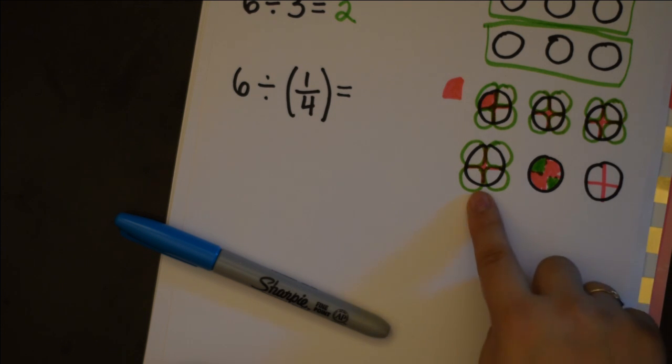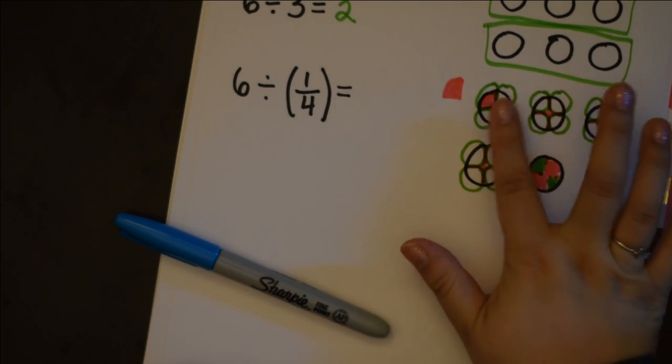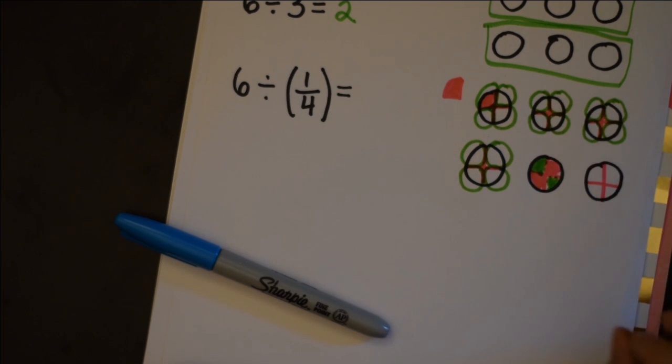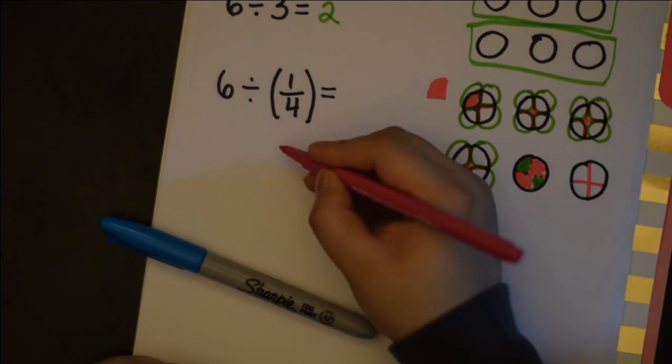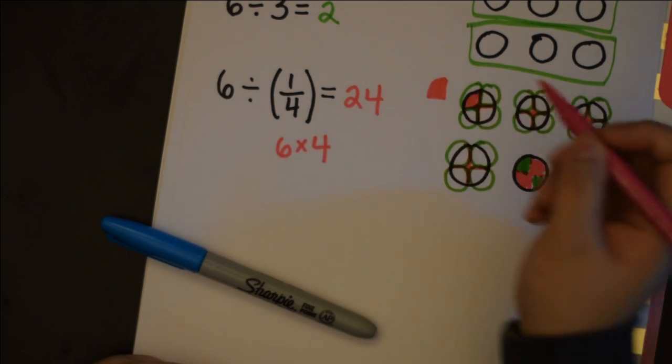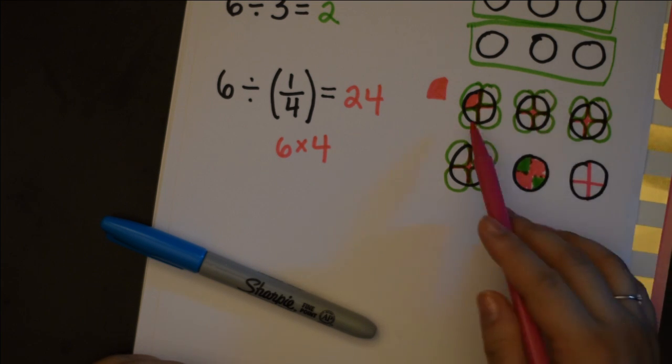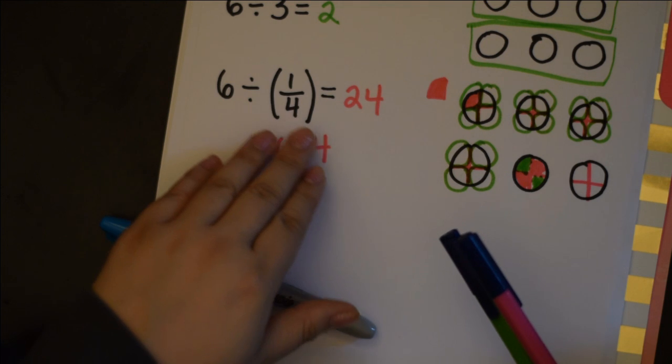So that means between one, two, three, four, five, six. Then I have four plus four plus four. So 12, 16, wait, 16, 20, 24. So one, two, three, four, five, six. And if each of those six have four, then you have six times four. Six times four, which gives me a total of 24 one fourth pieces in my six.